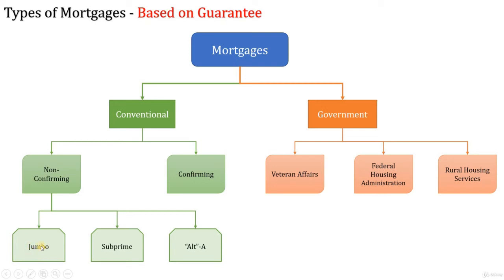Jumbo loans are loans in which the loan amount is above the limit set by Freddie Mac and Fannie Mae. This limit changes annually based on the single-family home price survey done by the Federal Housing Finance Board. For example, in 2002 the conforming loan limit was $300,700, so loans above that limit are called jumbo loans. Jumbo loans have interest rates higher by about 0.25% to 0.50% than conventional loans.